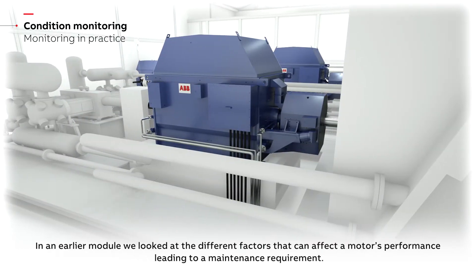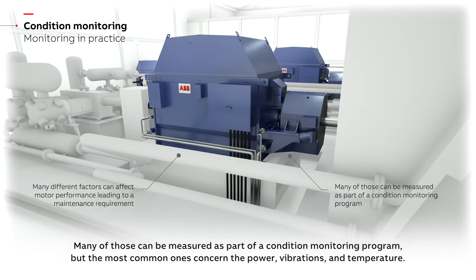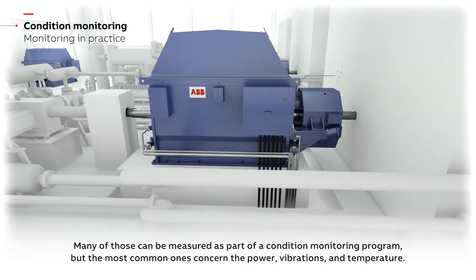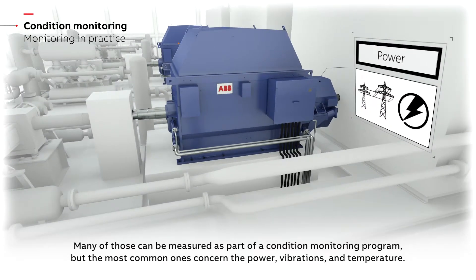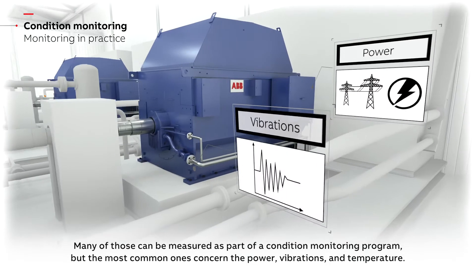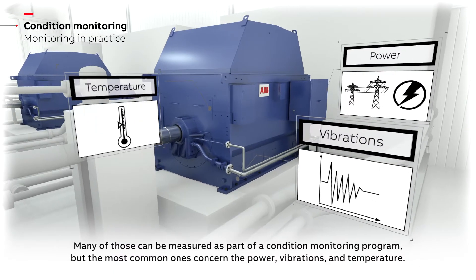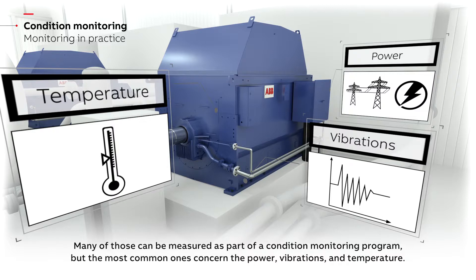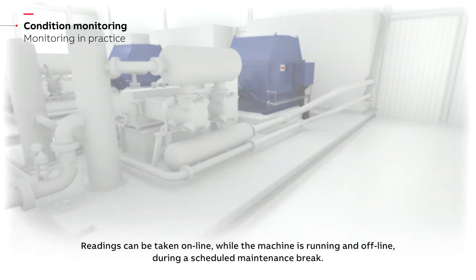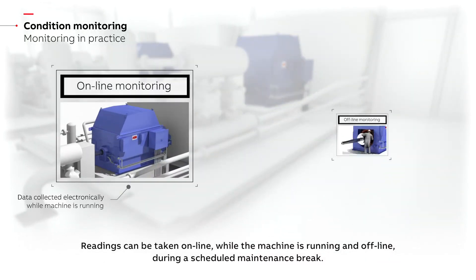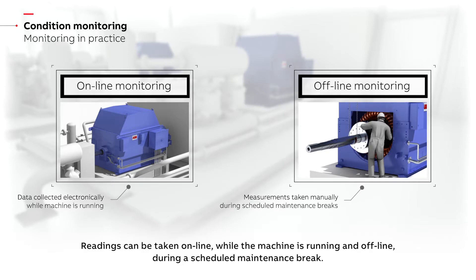In an earlier module we looked at the different factors that can affect a motor's performance leading to a maintenance requirement. Many of those can be measured as part of a condition monitoring program, but the most common ones concern power, vibrations, and temperature. Readings can be taken online while the machine is running, and offline during a scheduled maintenance break.